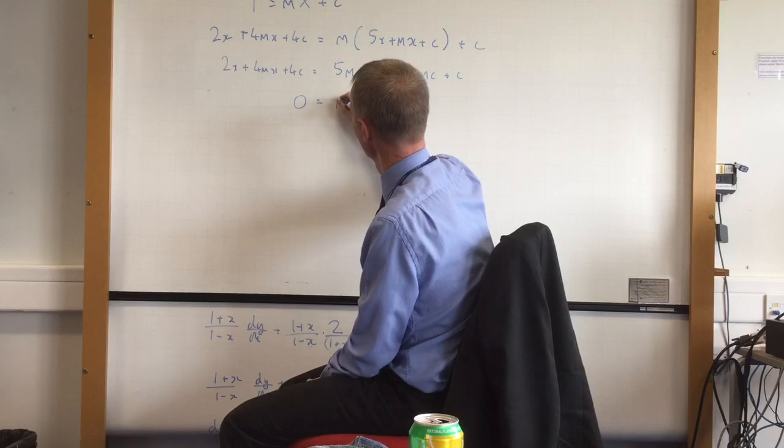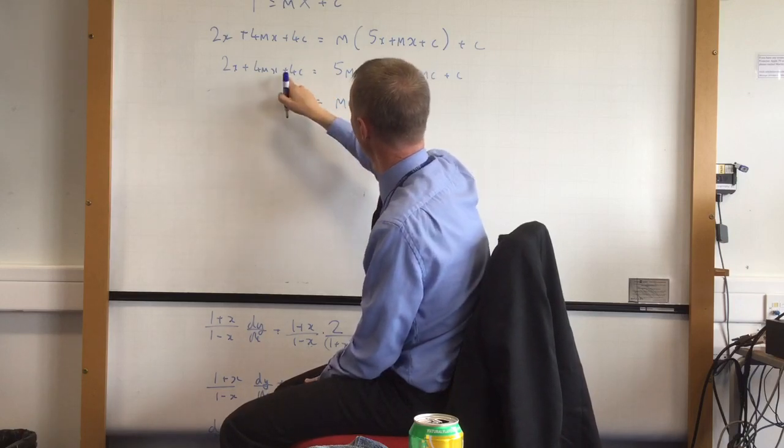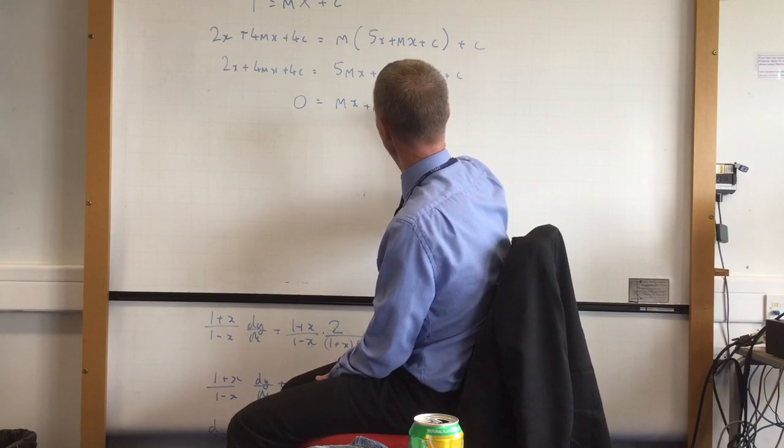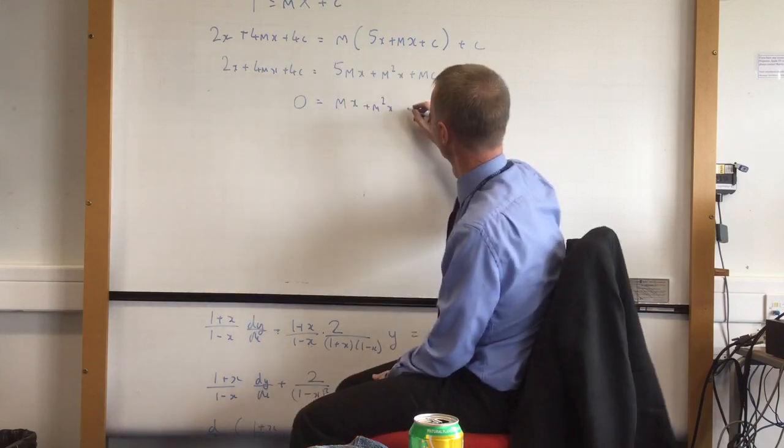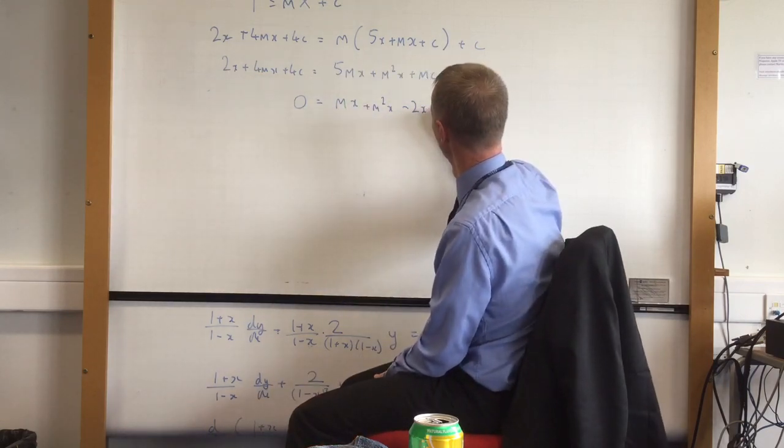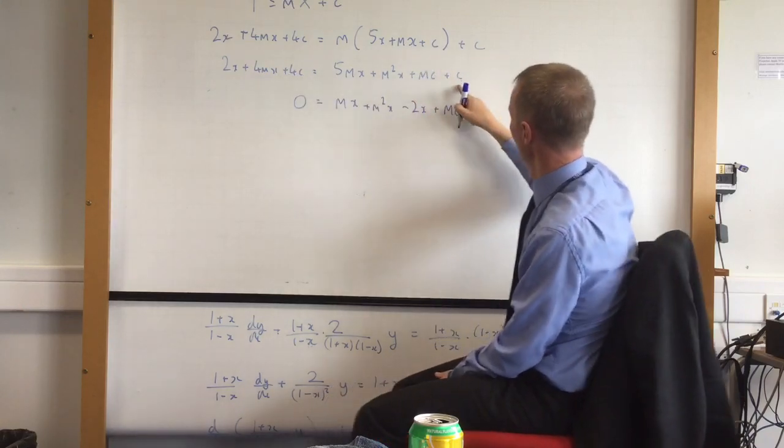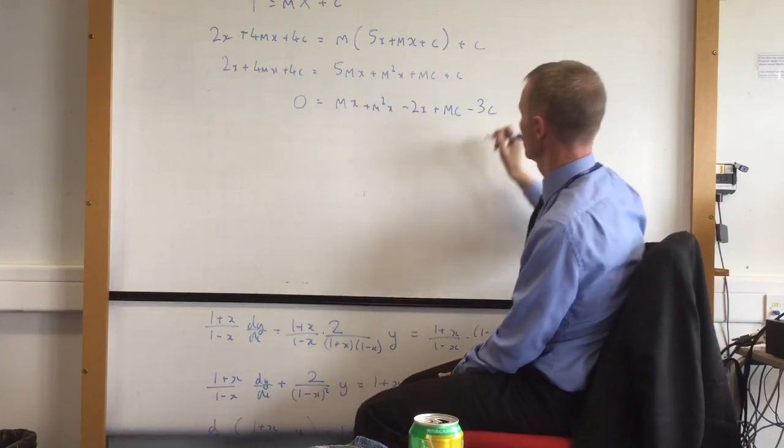That and that is going to make just mx. I'm going to have m squared x and I'm going to have a minus 2x. And I've still got the mc and the 4c and that I'm going to make minus 3c.